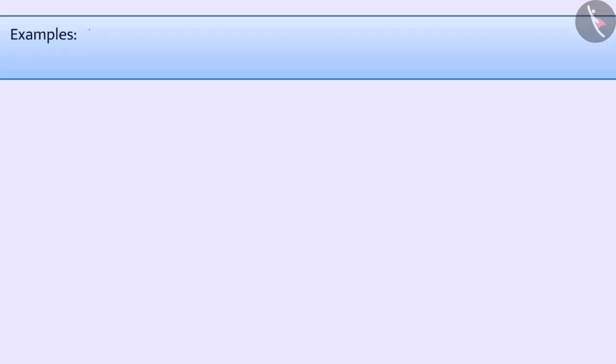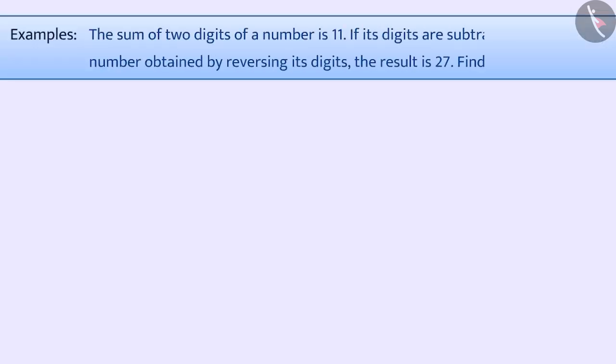Next example. The sum of two digits of a number is 11. If its digits are subtracted from the number obtained by reversing its digits, the result is 27. Find out the number.